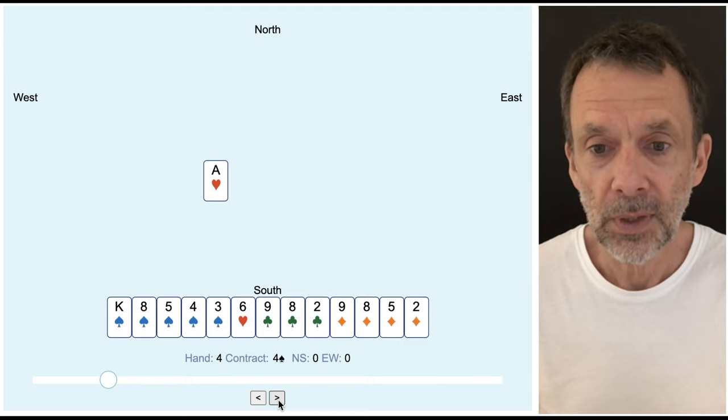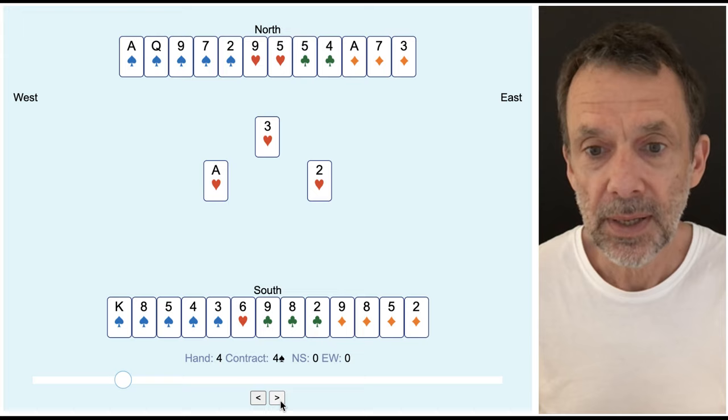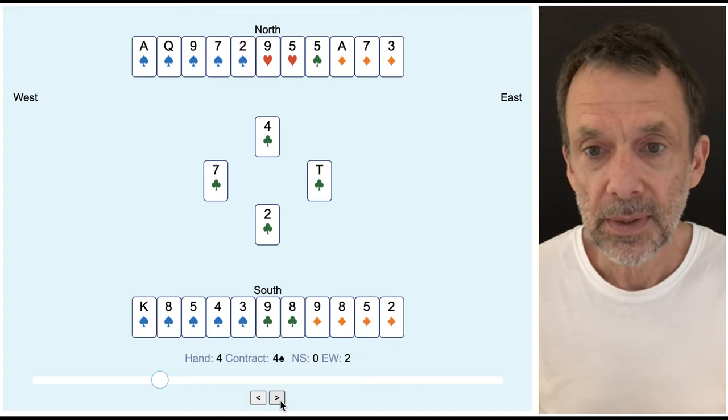Ace of hearts. Here's the dummy. And it looks like we're going to lose a heart, and a couple of clubs, and maybe a couple of diamonds. Just following suit here. Nothing much we can do.